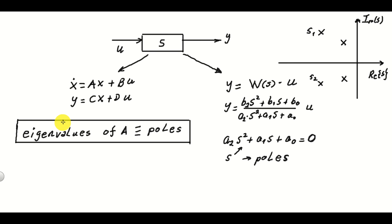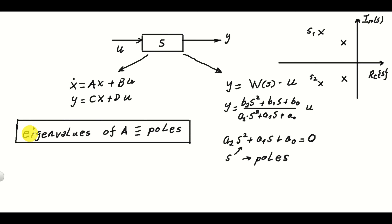However, I have to add one small detail that is very important for PhD students interested in advanced control theory. I implicitly assumed that both representations — that is, both state-space and the transfer function form — are minimal. This means that in the case of transfer functions there are no pole-zero cancellations, and in the case of the state-space model it is both observable and controllable. For complete beginners, forget about this — just remember that eigenvalues of A are poles. For people who want to learn advanced control theory, always keep in mind that both representations must be minimal.